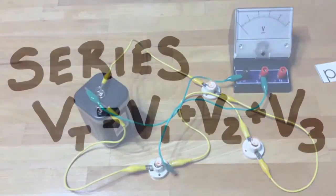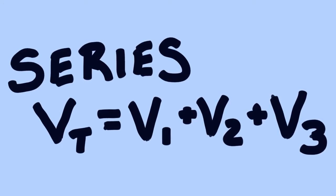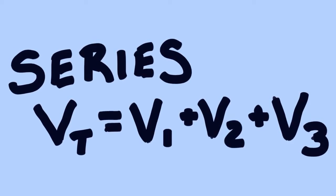So for series the source voltage, the total voltage, is equal to the sum of the voltage users. And the current in that series circuit is a constant value.